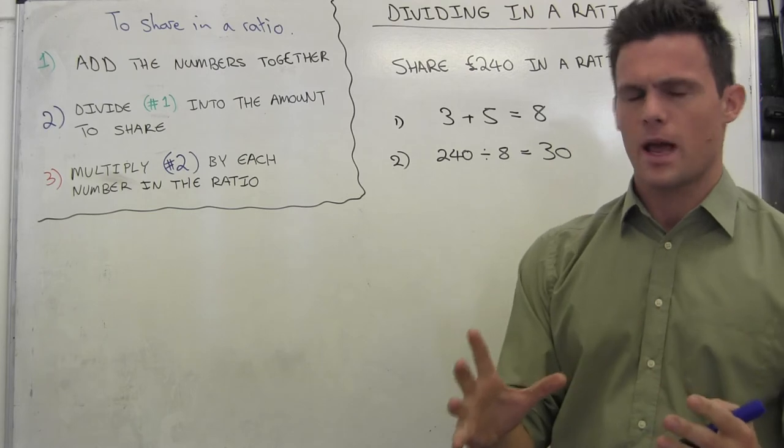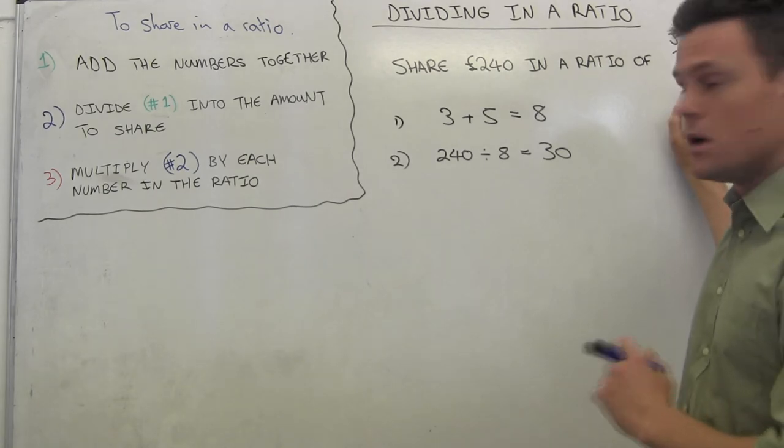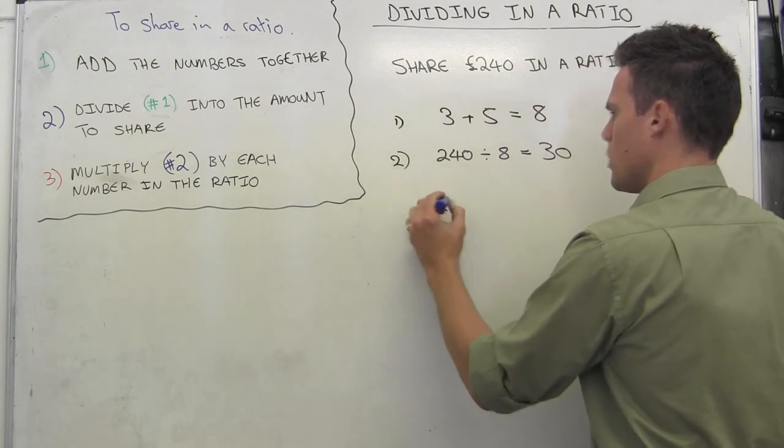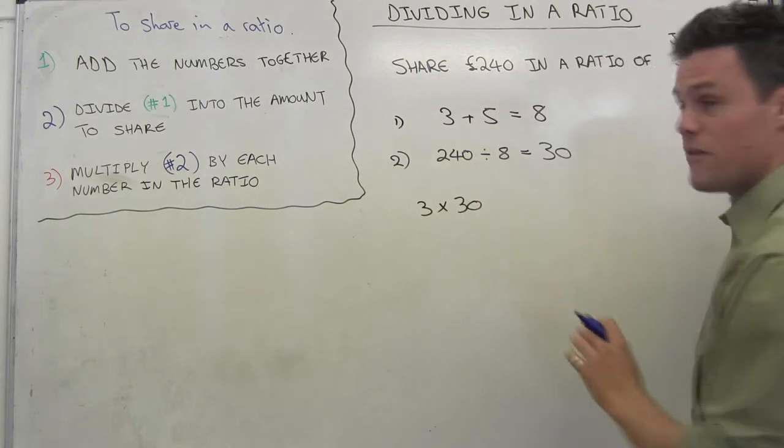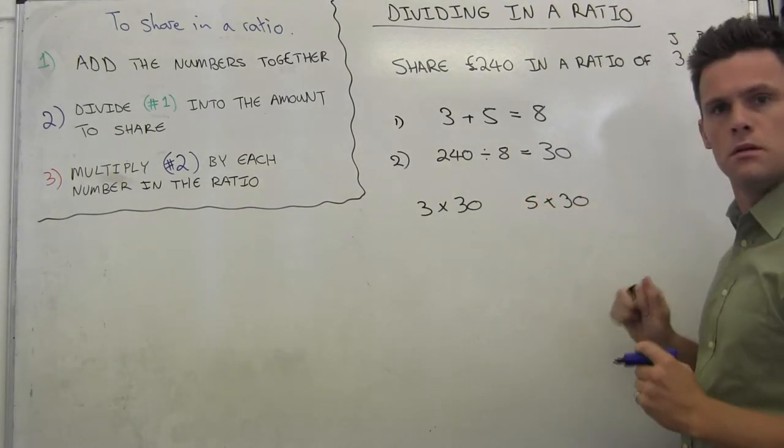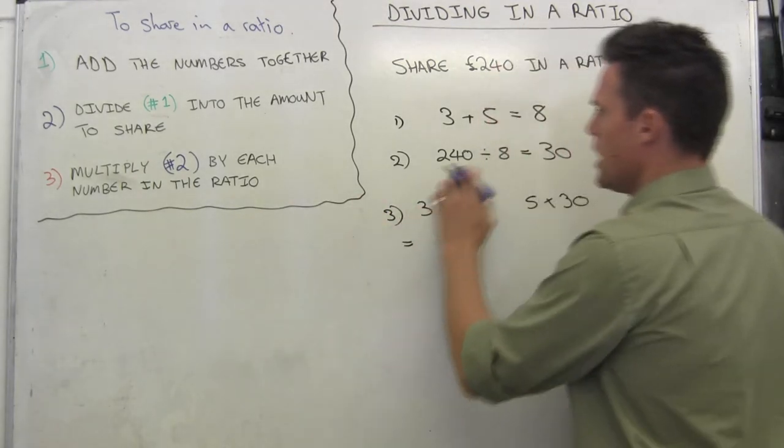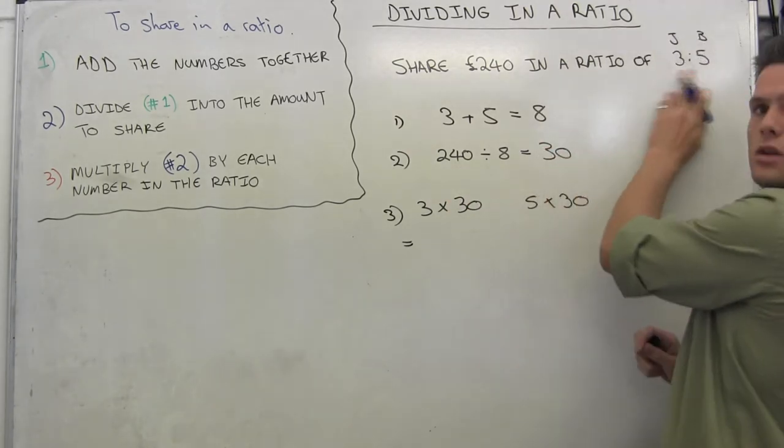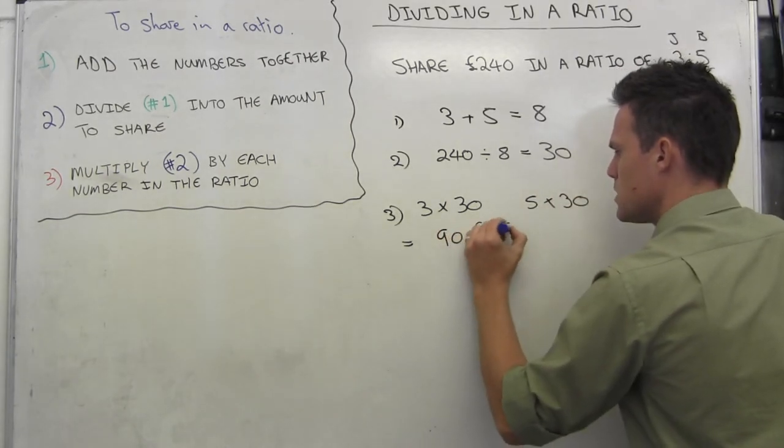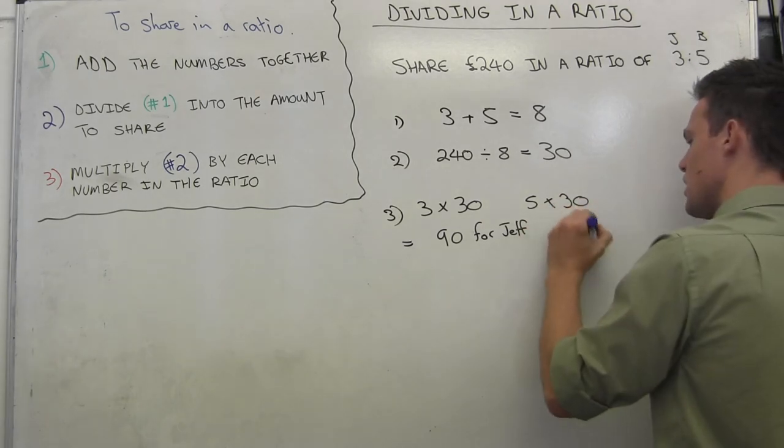But I'm not actually giving away 8 pounds. I'm giving away 3 pounds to Jeff and 5 pounds to Bill each time. So in that case, I'm simply going, well how many 3s am I giving away? Well I'm giving away 30 3s. How many 5 pounds am I giving away? I'm giving away 30 lots of 5 pounds. And that is step number 3 then, multiplying this number here by each number in the ratio. So that means that Jeff gets 90 pounds and Bill gets 5 times 30, which is 150 pounds.